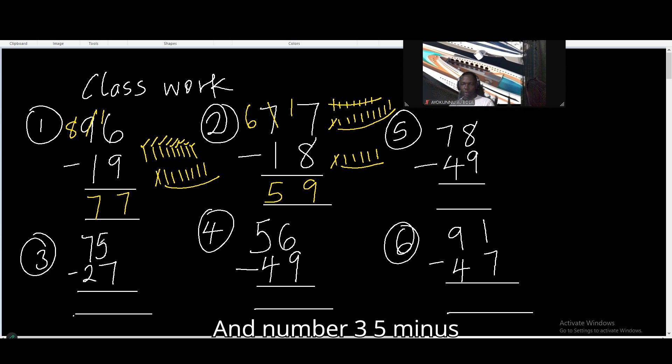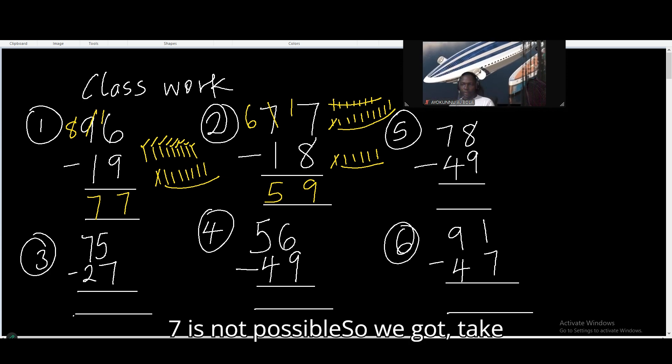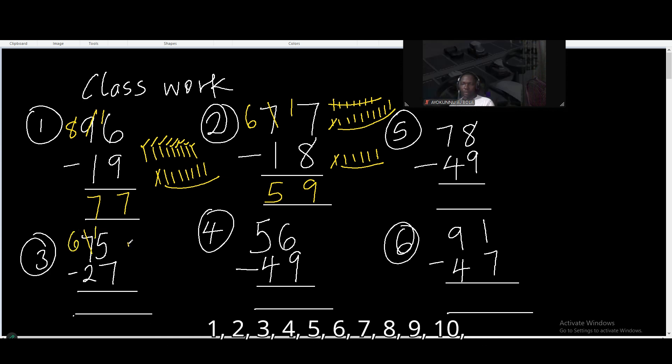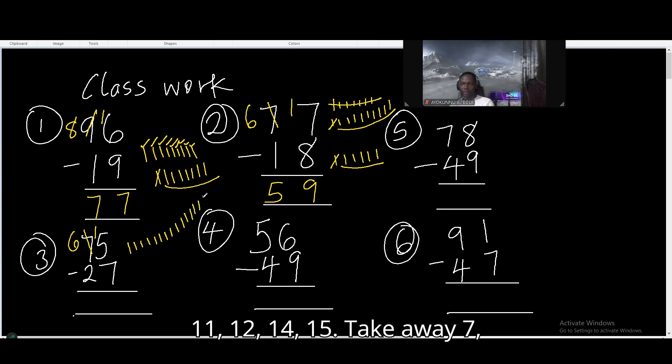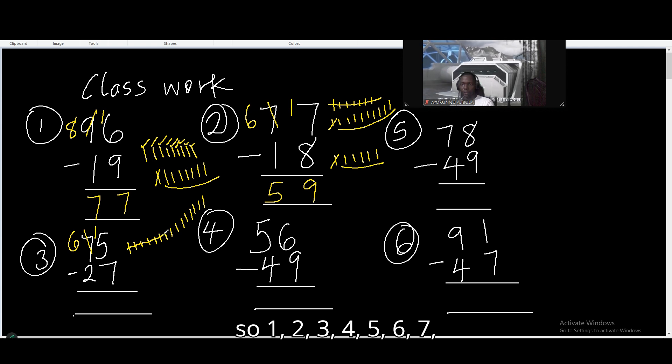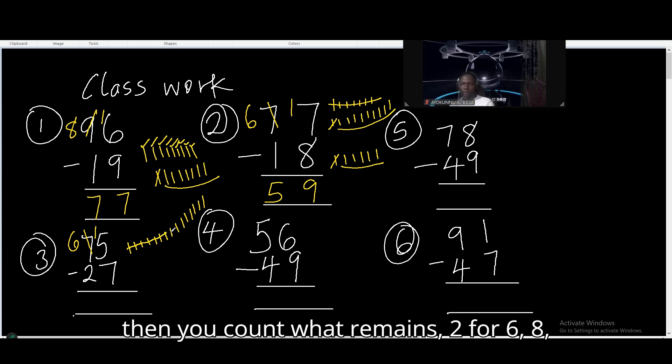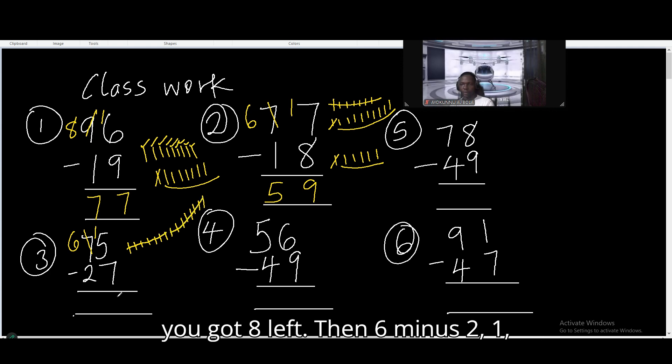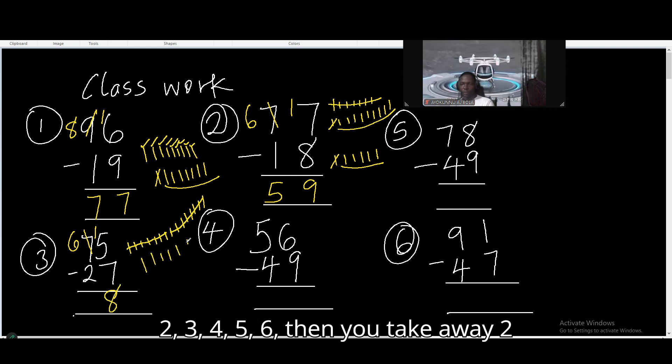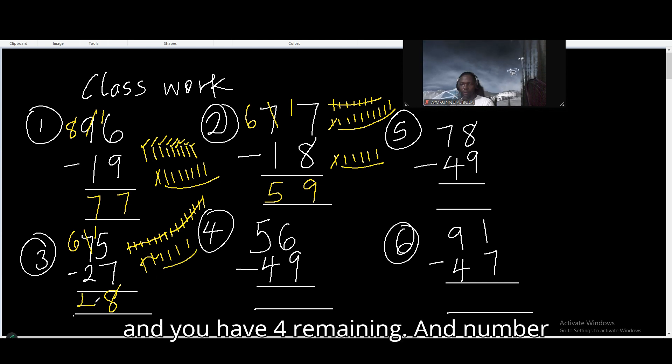And number 3. 5 minus 7 is not possible. So we got to take away 1 from here. You get 6. You get 15. 1, 2, 3, 4, 5, 6, 7, 8, 9, 10, 11, 12, 13, 14, 15. Take away 7. Then you count what remains. 2, 4, 6, 8. You get 8 left. Then 6 minus 2. Then you take away 2 and you have 4 remaining.